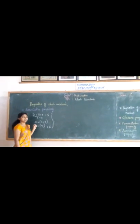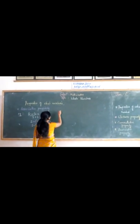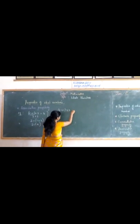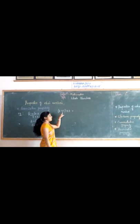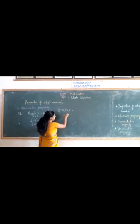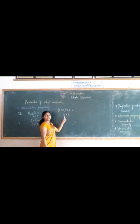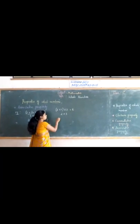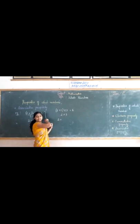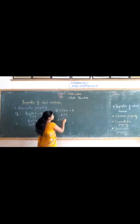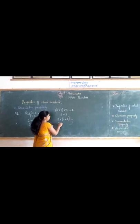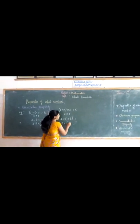Next, let us check associative property for multiplication. Take 2 into 1 as one group, then multiply with 3. We get 2 into 1 equals 2, and 2 into 3 equals 6. Now we make 1 and 3 another group: 2 into (1 into 3). We get 1 into 3 equals 3, then 2 into 3 equals 6.